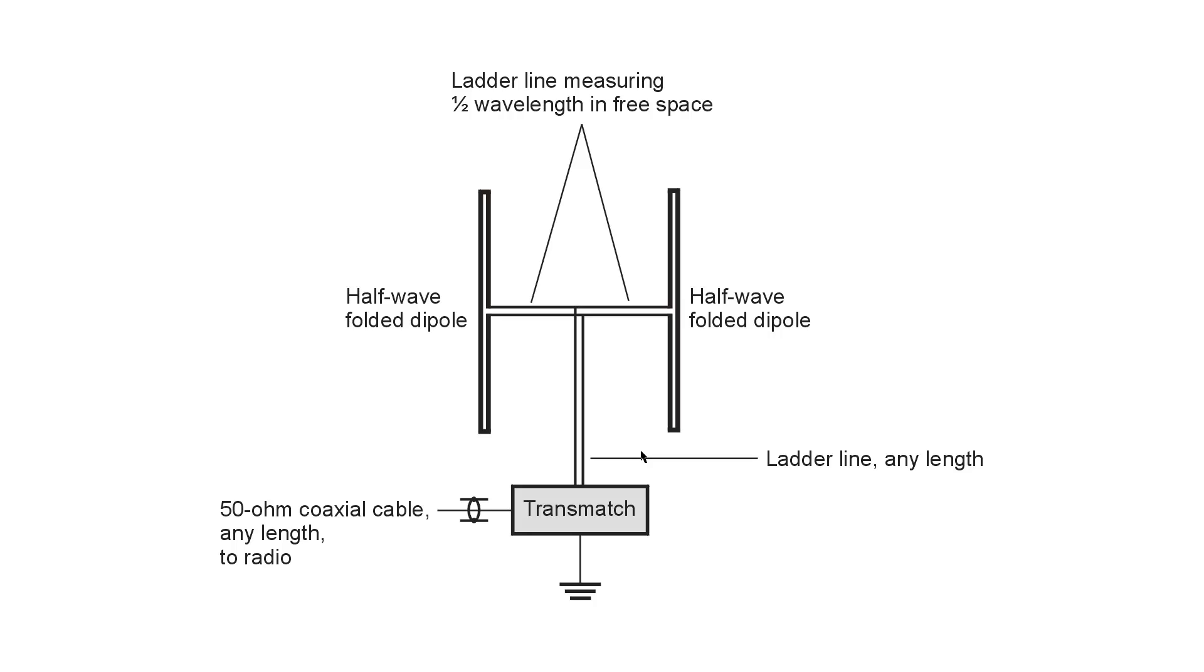And that's one of the great assets of ladder line or open wire line and one of the reasons that radio amateurs still use this kind of line today. But what you get is a broadside array of half-wave folded dipoles. So you should get roughly 3 decibels of gain over a single dipole. That's power gain.